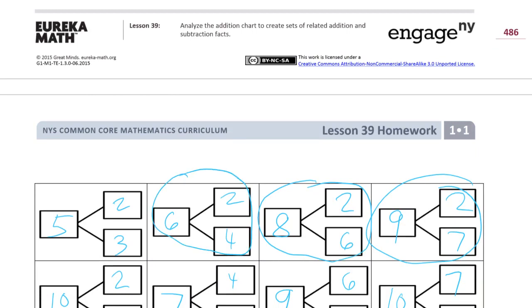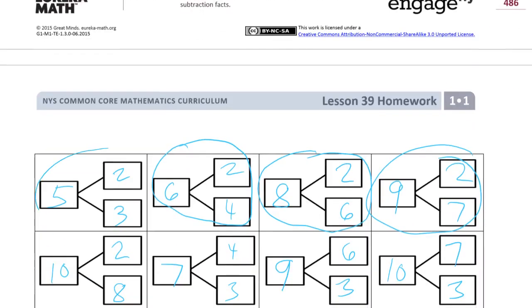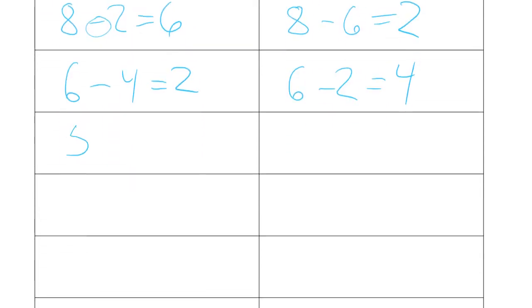So we have 6, 4, and 2. So we have 6 minus 4 equals 2. And then the related subtraction one would be 6 minus the other part 2 equals the other part left, 4. Then we have 5, 3, and 2. 5 minus 3 equals 2, and 5 minus 2 equals 3.